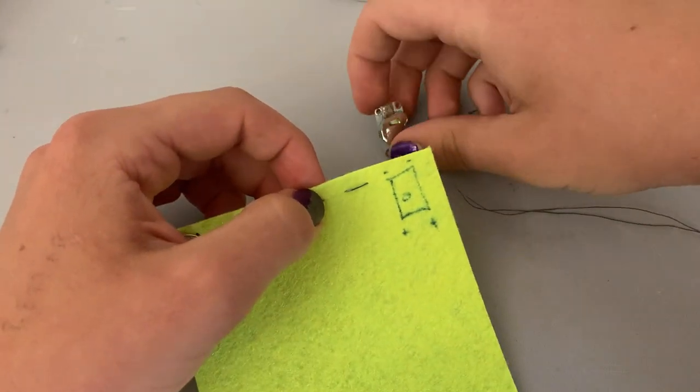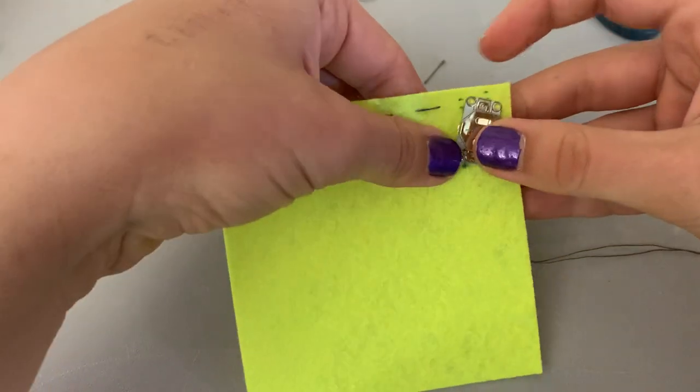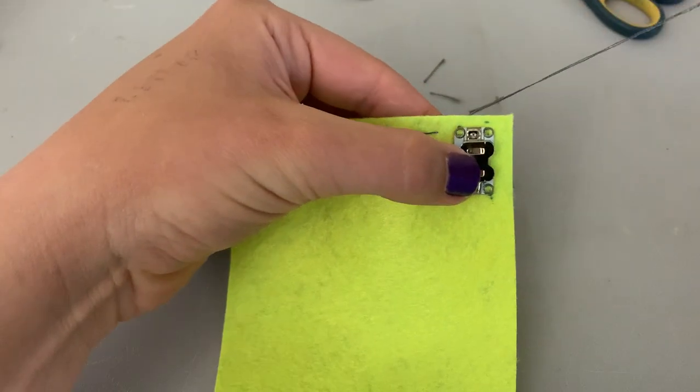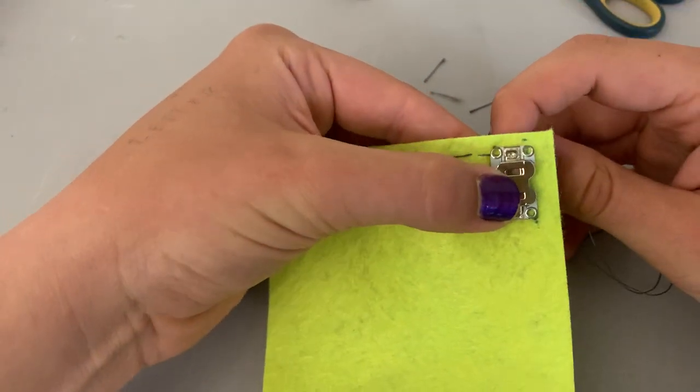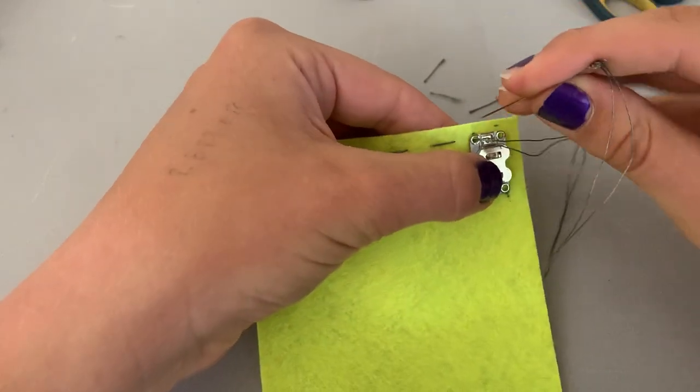Okay, I'm at my component. So I'm going to go ahead and line up my component with my drawing. And remember for sewing through components, we always want to go through three times. So I'm just going to go through the hole.